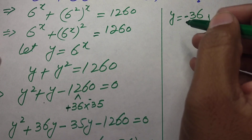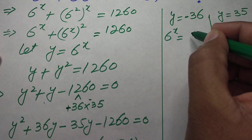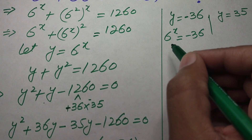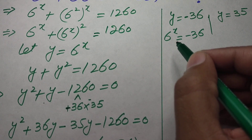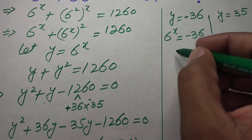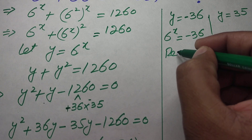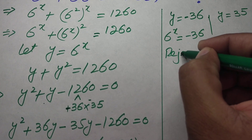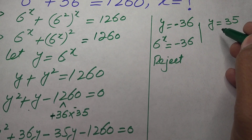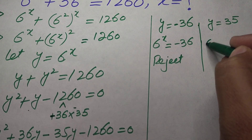We back-substitute using y equal to 6 to the power of x. This gives 6 to the power of x equal to minus 36, but the exponential function cannot be negative or zero, so we reject this solution and proceed with y equal to 35.